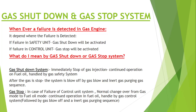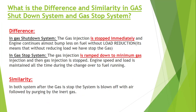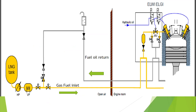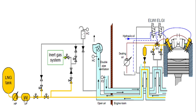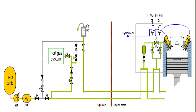This is the difference between gas shutdown and gas stop. If they ask you what happens when a gas shutdown or gas stop is activated, you can say that after the gas system is stopped, the system is first blown off with air and after that inert gas is used for purging the system.